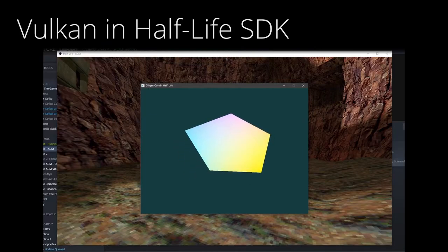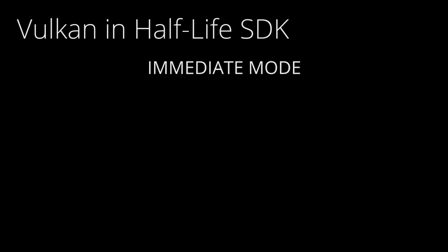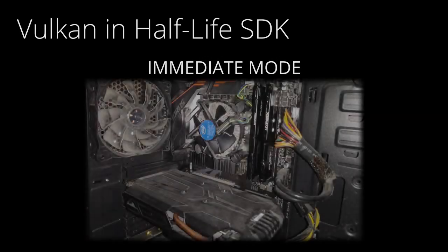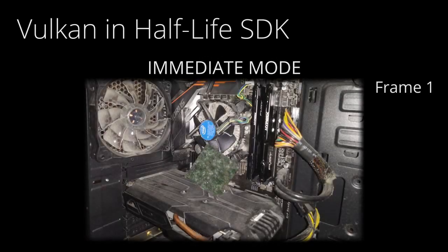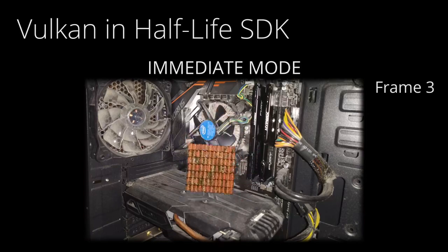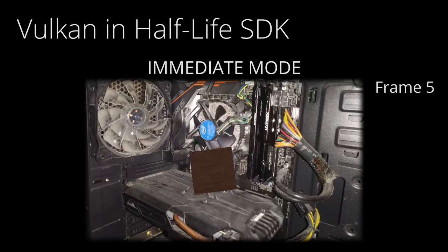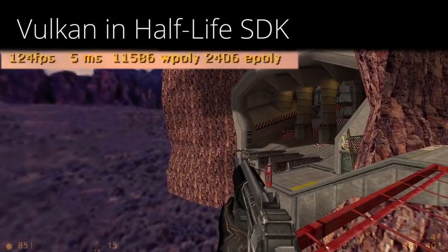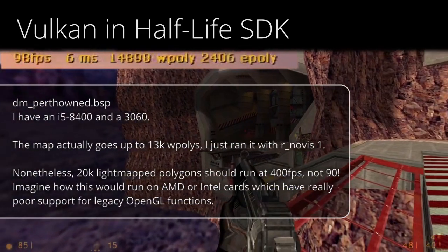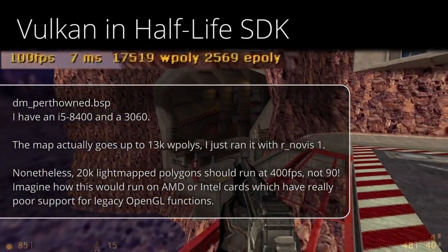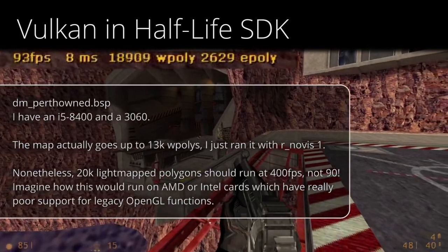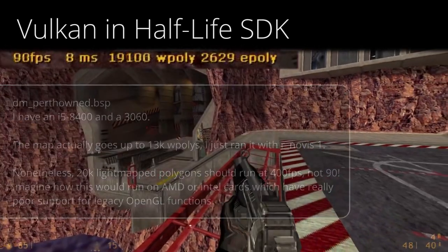Here's the thing: GoldSource uses something called Immediate Mode. That's when the CPU sends data to the GPU every frame. In other words, if you want to render a character model with 500 triangles, you gotta upload all that data every time you want to render it. This means you can get as low as 60fps on a 3090 and an i7 on some custom maps.